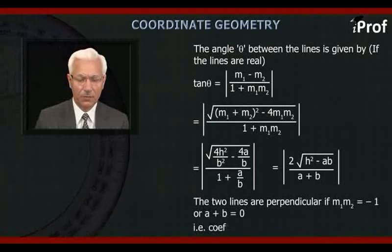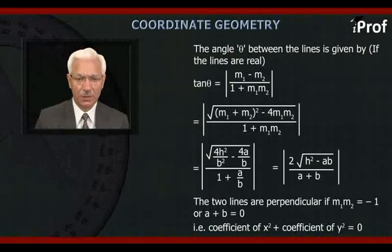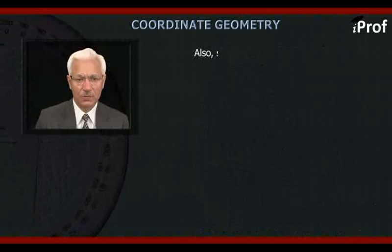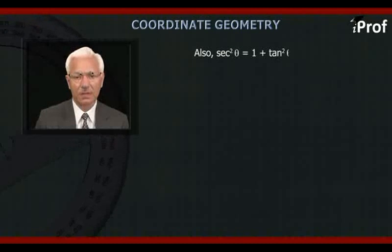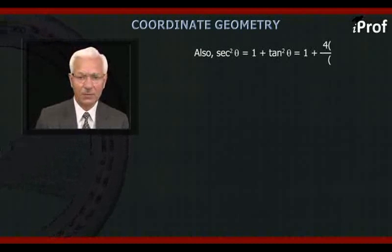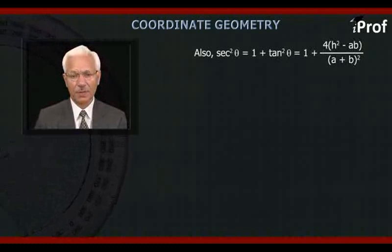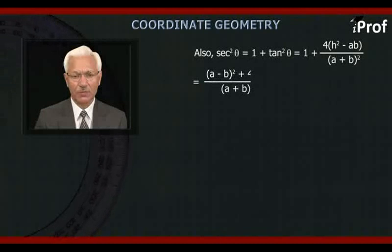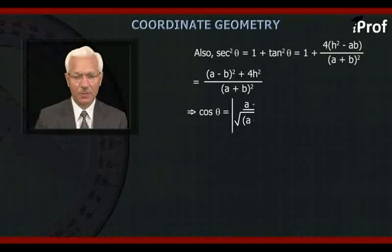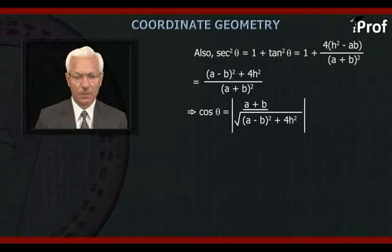For the lines to be perpendicular, the coefficient of x² plus the coefficient of y² equals 0, i.e., a + b = 0. Also, sec²θ = 1 + tan²θ = 1 + 4(h² − ab)/(a + b)² = [(a − b)² + 4h²] / (a + b)². Therefore cos θ = |a + b| / √((a − b)² + 4h²).